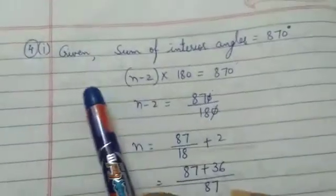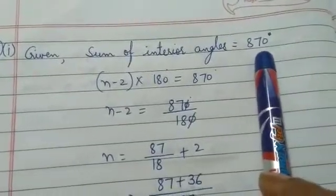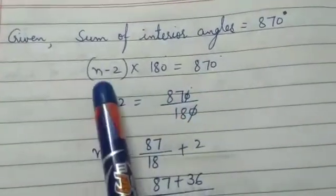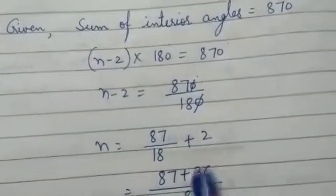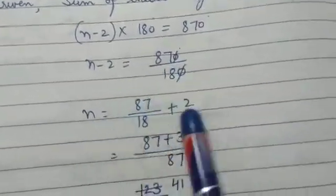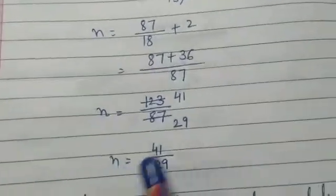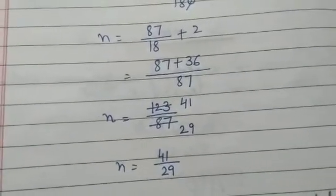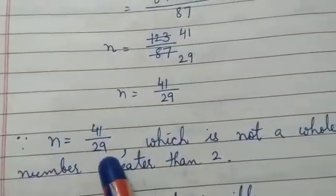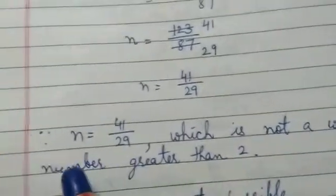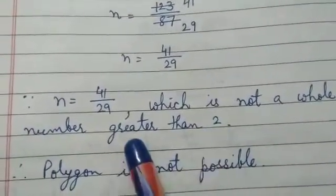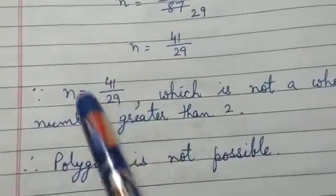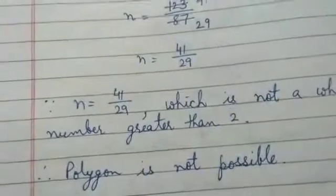So see the answer. Given is sum of interior angles = 870 degrees, and the sum of interior angles formula is (n minus 2) into 180 degrees. First we find the value of n by simplifying this equation. Here n comes out to be 41/29, which is not a whole number. Since n = 41/29 is not a whole number greater than or equal to 3, the polygon is not possible.